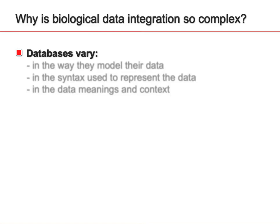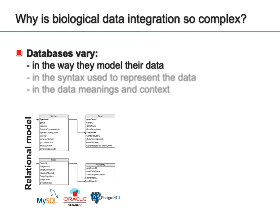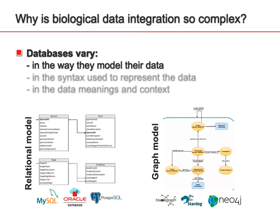Another issue is that biological data integration is quite complex. One problem is that databases vary in several ways — such as how they model and structurally organize the data. For example, it could be a relational model using technologies like MySQL or Oracle, or a graph model using technologies such as Neo4j, Stardog, Blazegraph, and so on. Since they use different technologies, this hardens data integration interoperability. Another problem is the syntax used to represent data, which can also be heterogeneous — for example, JSON files, XML files, CSV files, and so on.